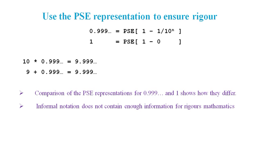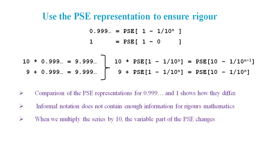Informal notation doesn't contain enough information for rigorous mathematics. For example, it seems we can get to 9.9 recurring via these two different methods: 10 times 0.9 recurring, and 9 plus 0.9 recurring. But now if we do this with more rigour using the PSE representation, we get two different results. In the first case where we've multiplied by 10, the variable part of the PSE has changed. We've now got -1/10^(n-1). In the second case where we've added 9 to the series, the variable part of the PSE is still -1/10^n. So in the top case there, the sum to the first term is going to be 10-1, which is 9. In the second case, the sum to the first term is 10-1/10, which gives 9.9. So you can see how these two differ.